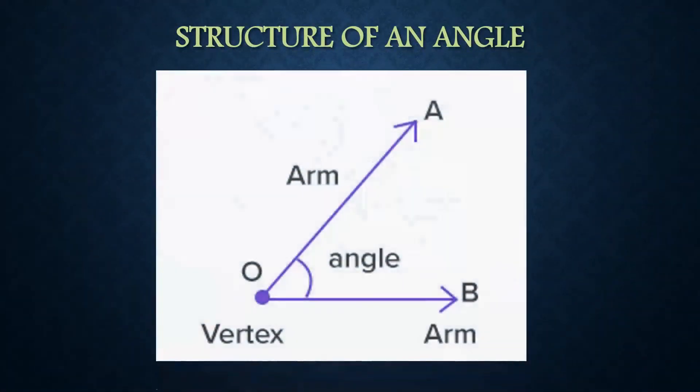This is the structure of an angle. This angle is called angle AOB. Where OA, that is a ray, it is its arm. Ray OB is another arm. Ray OA meets Ray OB at the point O. That point O is called its vertex.